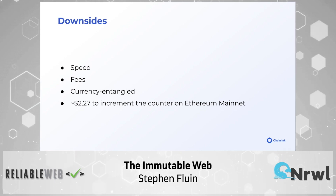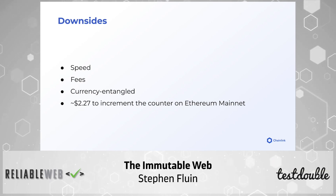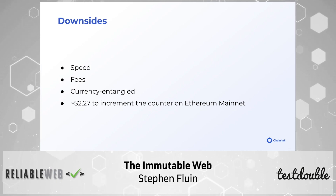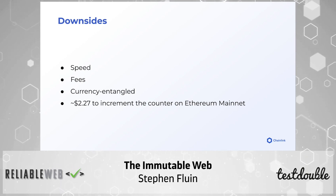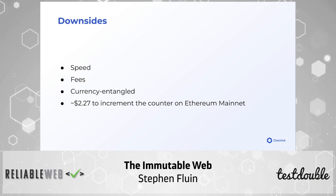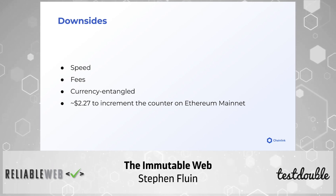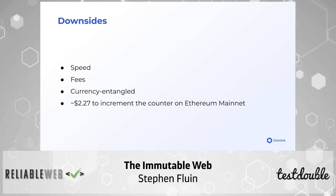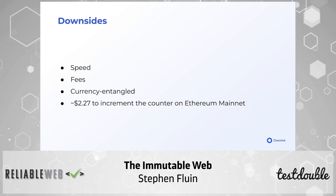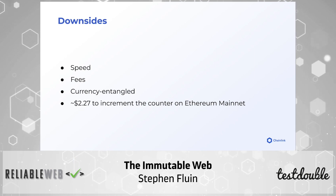As you're getting started, keep in mind some downsides. There's a speed element — transactions take at least 15 seconds on Ethereum because each block processes every 15 seconds. There are networks doing more real-time processing, but you'll have to look into those yourself. Think about fees — everything you do as a developer ends up being a little bit currency-entangled. For example, to increment that counter on the Ethereum mainnet with its 11,000 nodes would actually cost around $2 USD. You have to think about this mental model and make sure it makes sense for your use case. Ethereum is one of the most expensive networks to deploy on, but there are lots of networks with different properties and pricing.